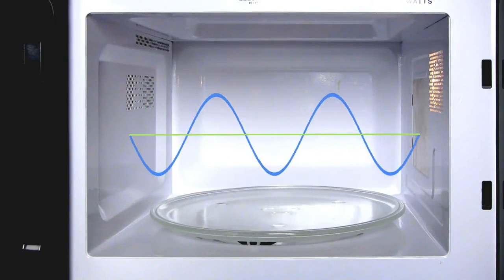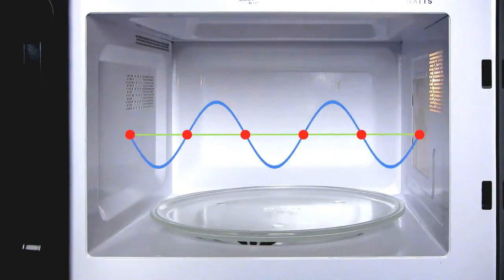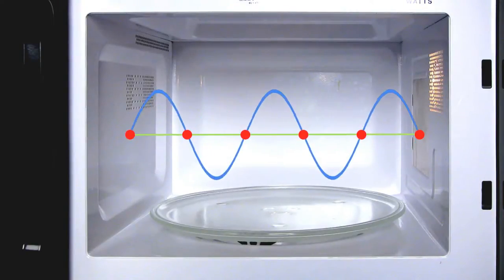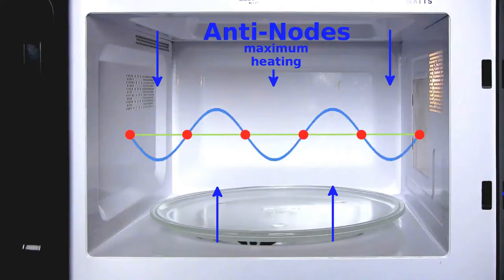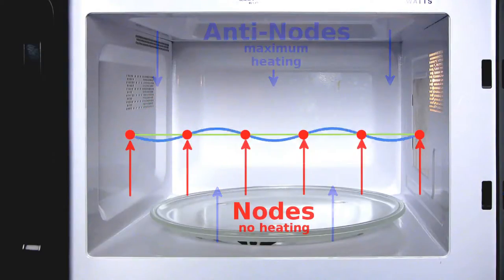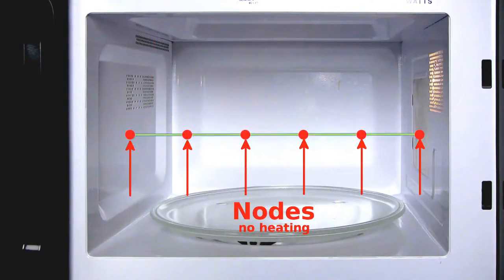The three-dimensional pattern of waves is difficult to predict, but the principle can be seen by looking at the waves in a single dimension. The peaks and valleys in the wave represent the greatest energy of the wave, while the nodes here correspond to the cold spots inside the chamber.